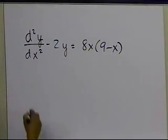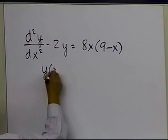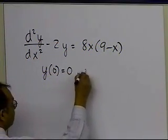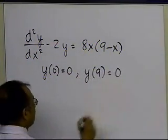What we had was that the boundary conditions which are given are y(0) is equal to 0, and y(9) is equal to 0.